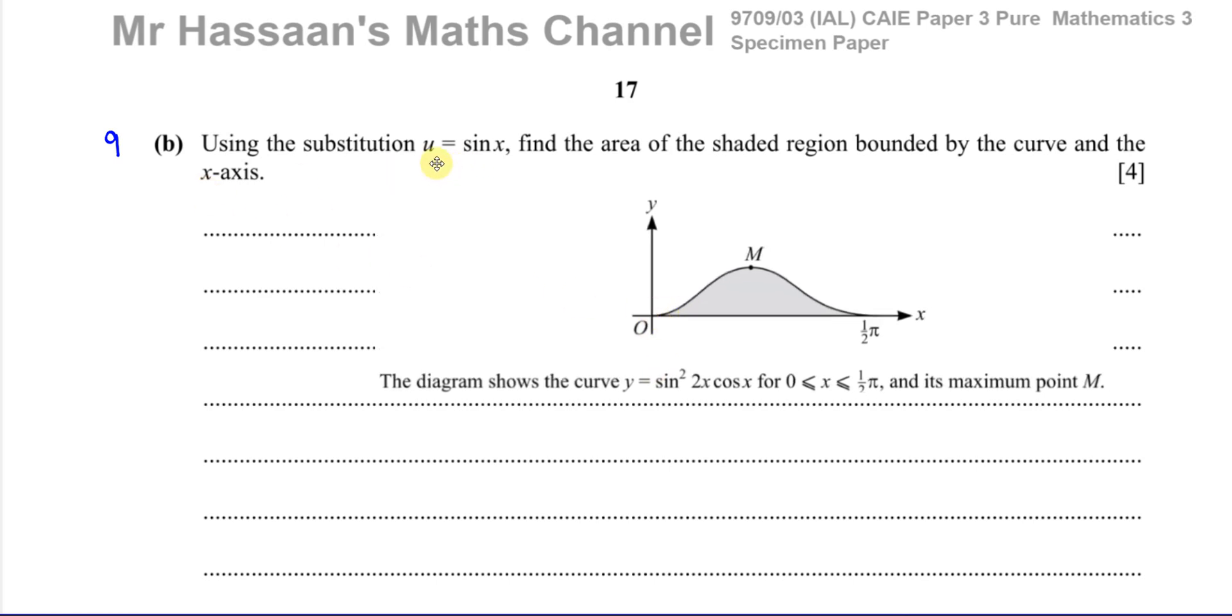It says, using the substitution U equals sine X, find the area of the shaded region bounded by the curve and the X-axis. So we've got to find this shaded region here between 0 and pi over 2 of the equation Y equals sine squared 2X times cosine X between 0 and a half pi.